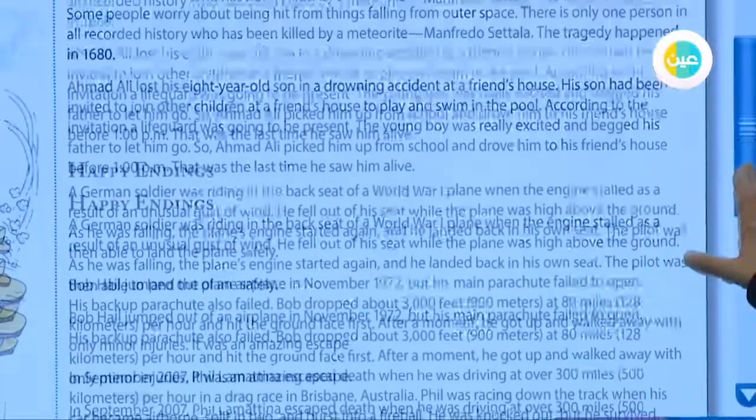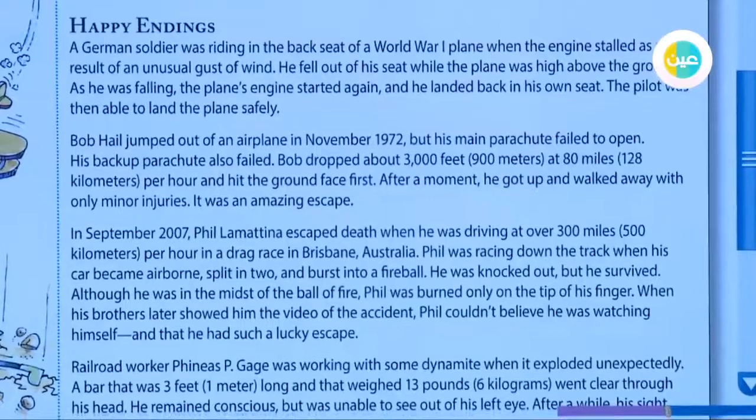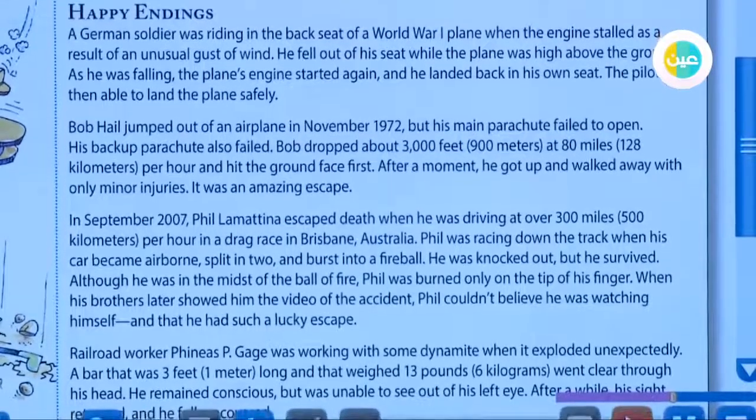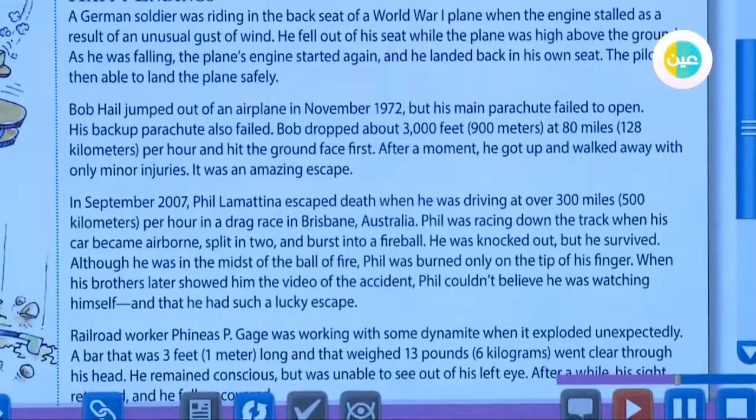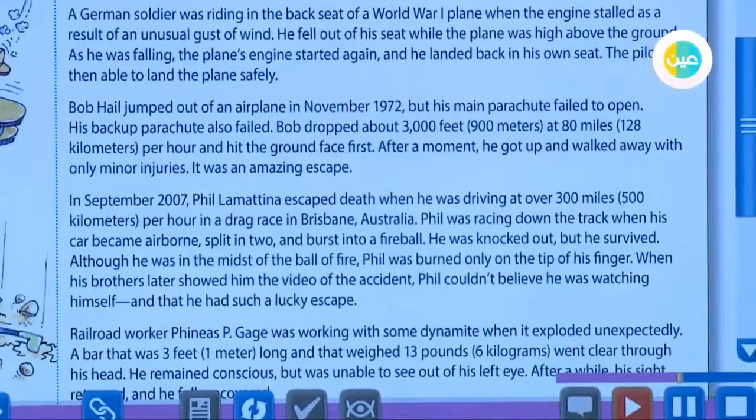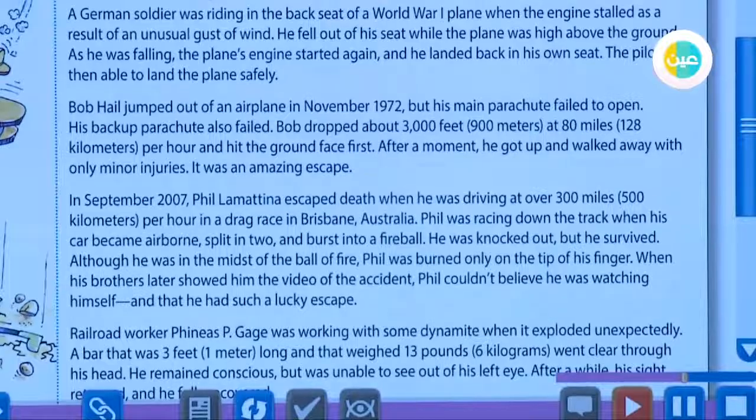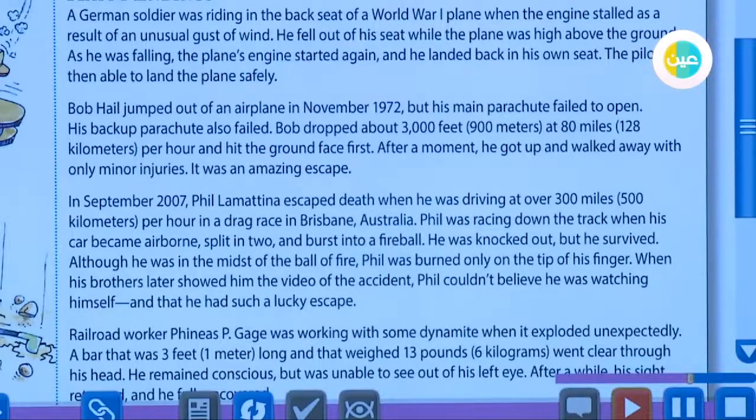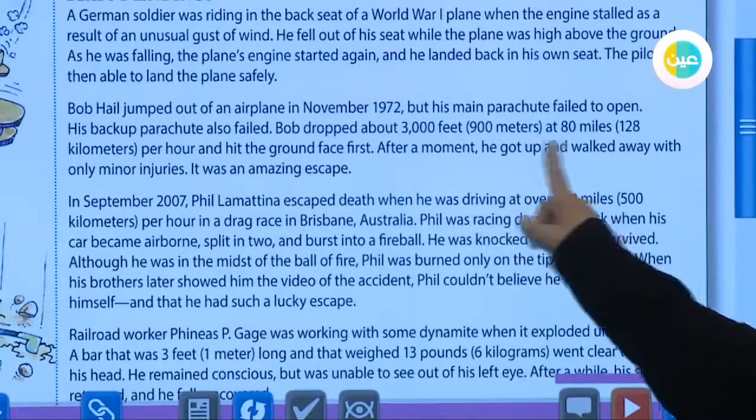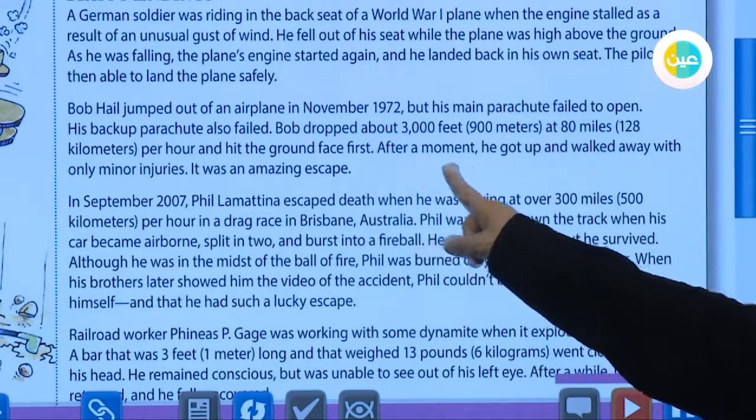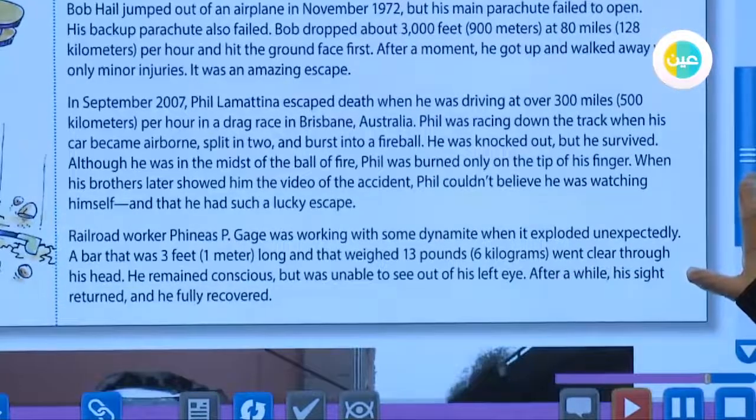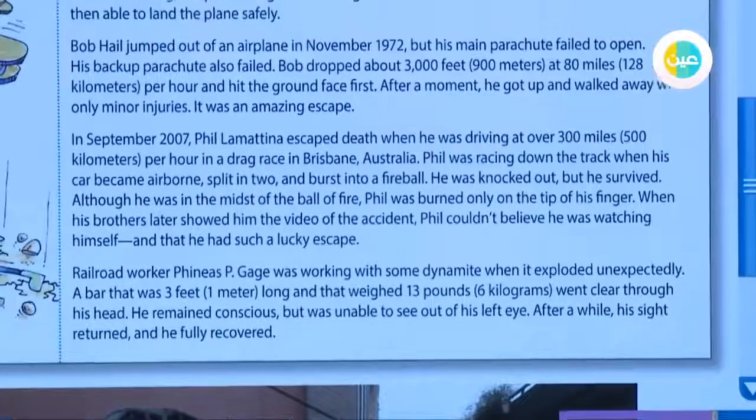Happy endings. A German soldier was riding in the back seat of a World War One plane when the engine stalled as the result of an unusual gust of wind. He fell out of his seat while the plane was high above the ground. As he was falling, the plane's engine started again and he landed back in his own seat. The pilot was then able to land the plane safely. Bob Hall jumped out of an airplane in November 1972, but his main parachute failed to open. His backup parachute also failed. Bob dropped about 3,000 feet, 900 meters, at 80 miles, 128 kilometers per hour, and hit the ground face first. After a moment, he got up and walked away with only minor injuries. It was an amazing escape.